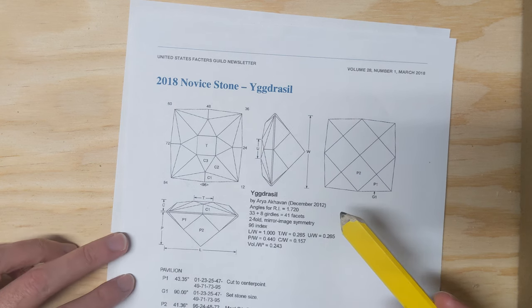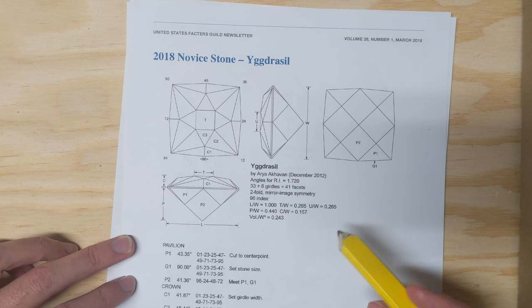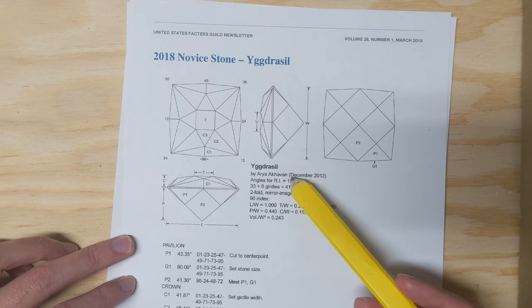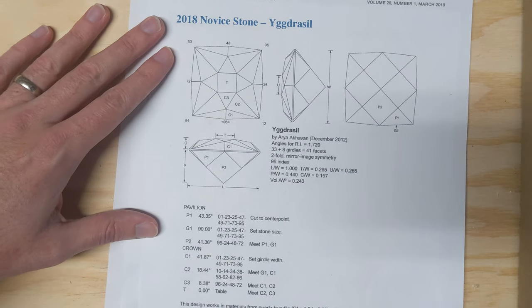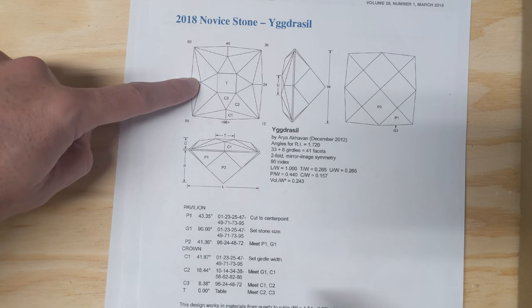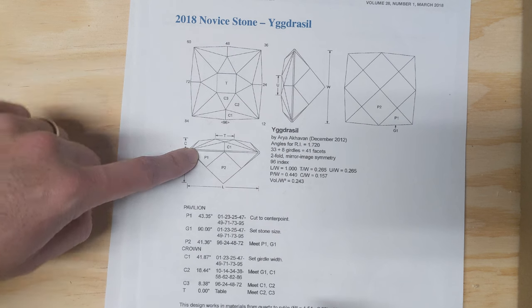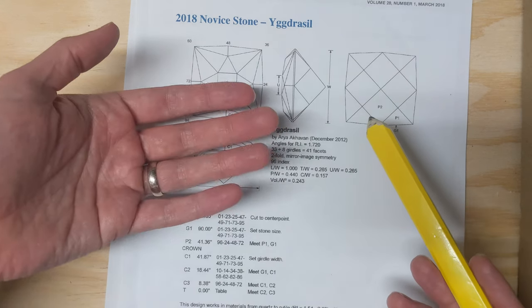There's a lot of open access diagrams that you can choose from. This one is called Yggdrasil by Eriya Akhavan, and the basic breakdown of the diagram is the title, then you have a top-down crown view, a side view, the opposite side view, and then the pavilion view looking at it from underneath.